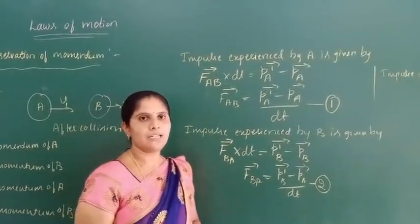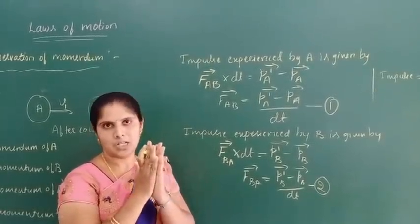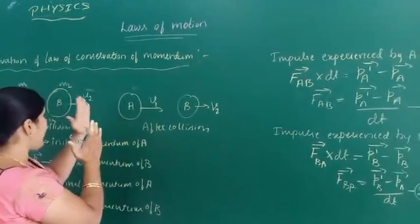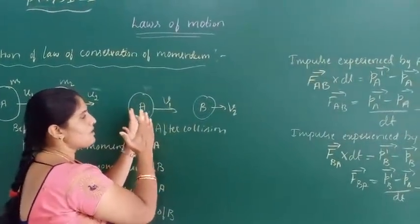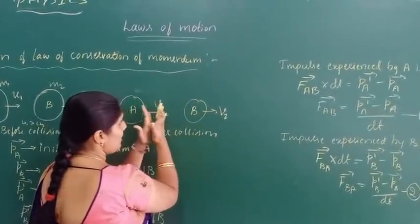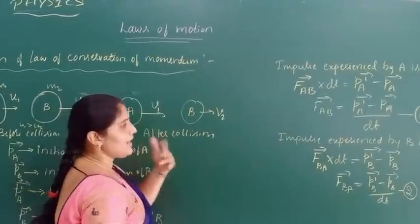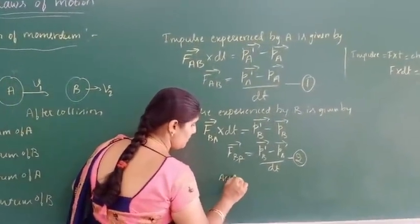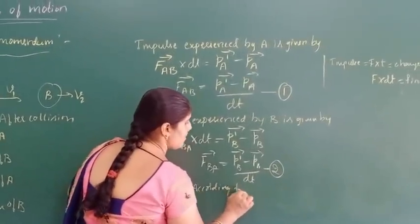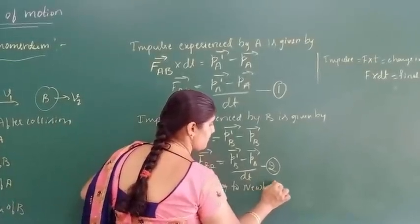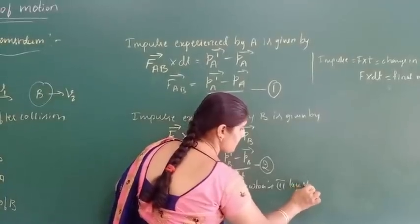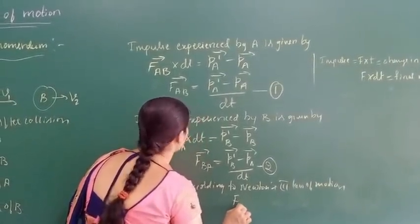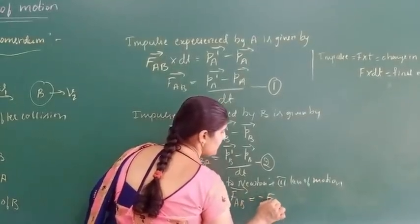According to Newton's third law, for every action there is an equal and opposite reaction. Here A and B are collided with each other. The force exerted by B on A is FAB and force exerted by A on B is FBA. They are equal in magnitude but opposite in direction. So FAB is equal to minus FBA.